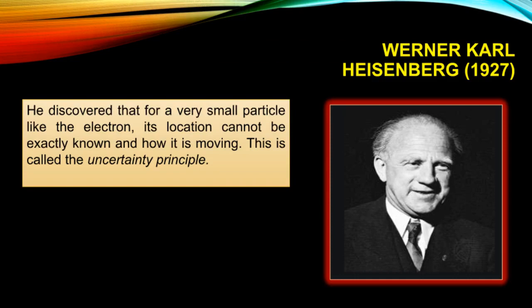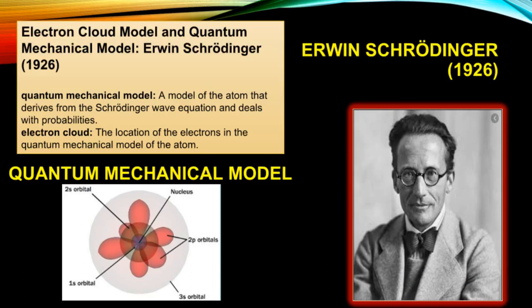Next is Werner Karl Heisenberg. He discovered that for a very small particle like the electron, its location cannot be exactly known, nor can how it is moving. This is called the uncertainty principle — you cannot locate the exact position of an electron at any given time.